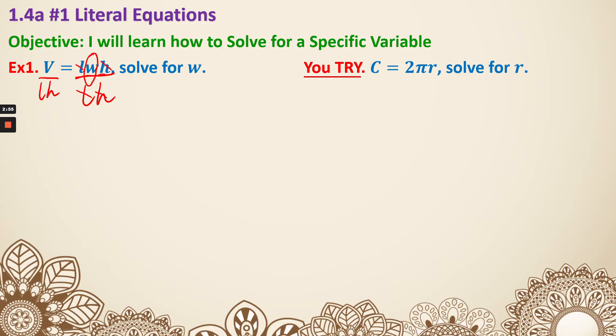So now the l is gone, the h is gone. w = V/(lh). The question says solve for w, and w is by itself now, so we're done.